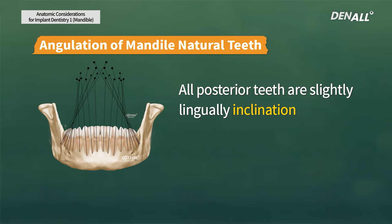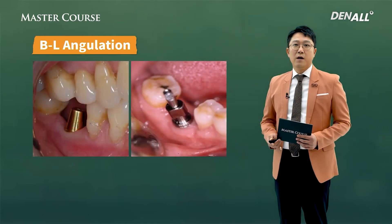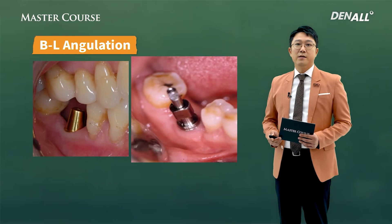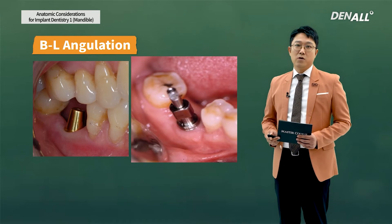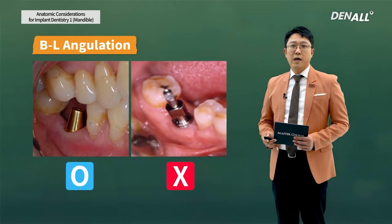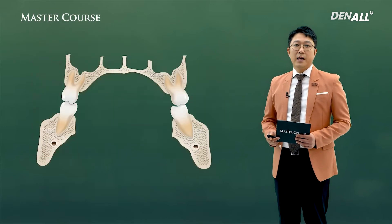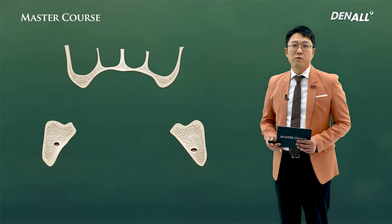If you look at the buccolingual inclination of lower natural teeth, the anterior teeth are a bit buccally inclined, but all posterior teeth are slightly lingually inclined, forming the natural curve of Wilson. When you place an implant at the lower molar area, a buccally inclined implant is not good for the opposing teeth or from masticatory mechanical perspectives. There is a risk of lingual perforation, so you need to be careful. However, when the alveolar ridge is severely resorbed, it is sometimes difficult to incline the implant lingually.